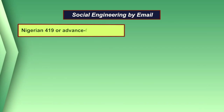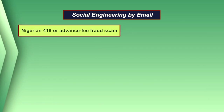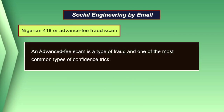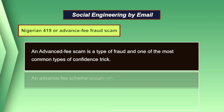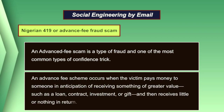The second type of social engineering by email is the Nigerian 419 or advanced fee fraud scam. An advanced fee scam is a type of fraud and one of the most common types of confidence trick. The scam typically involves promising the victim a significant share of a large sum of money, which the fraudster requires a small upfront payment to obtain.